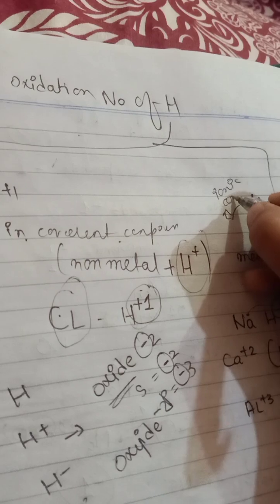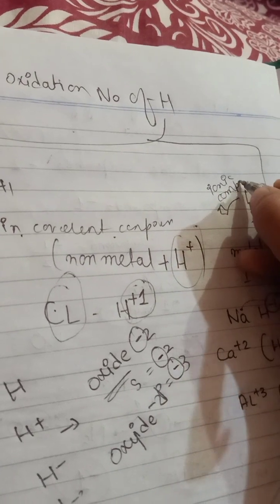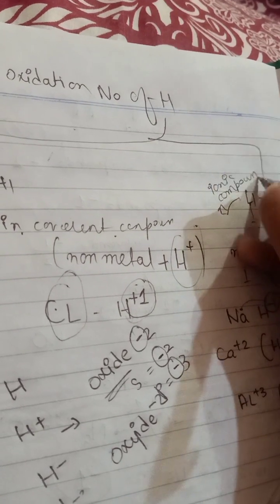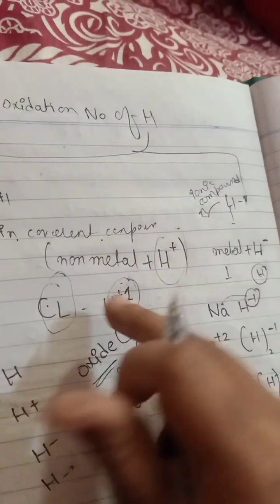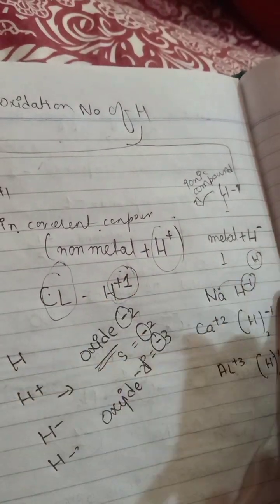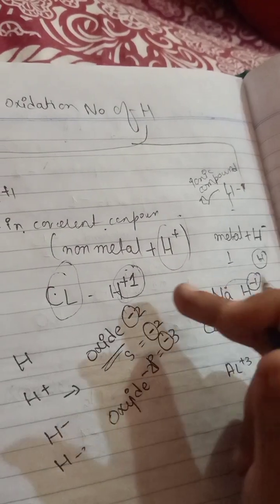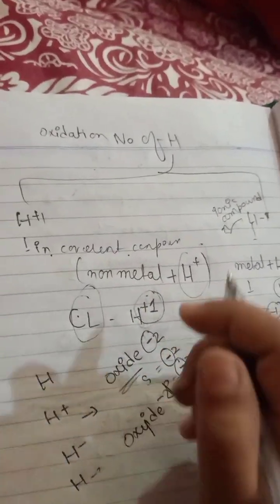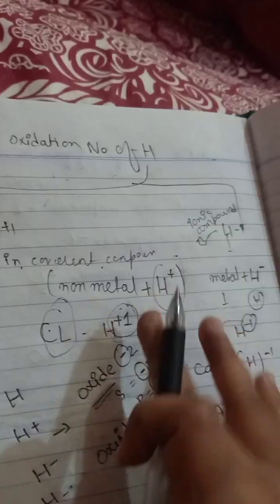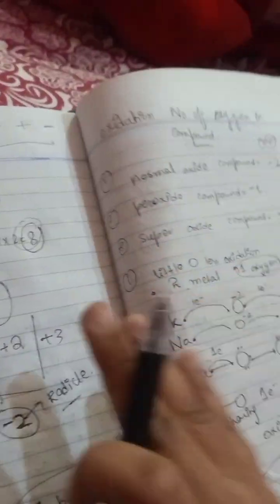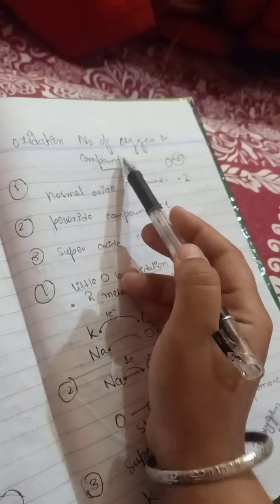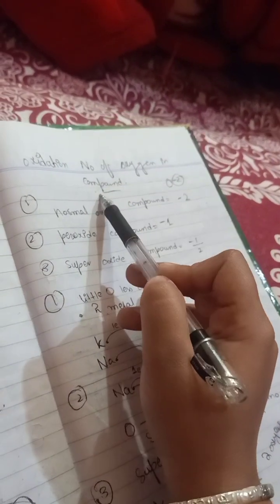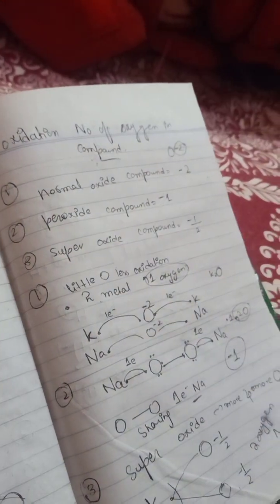Both are binary compounds involving hydrogen. This was about the oxidation number of hydrogen and the oxidation number of oxygen in compounds.